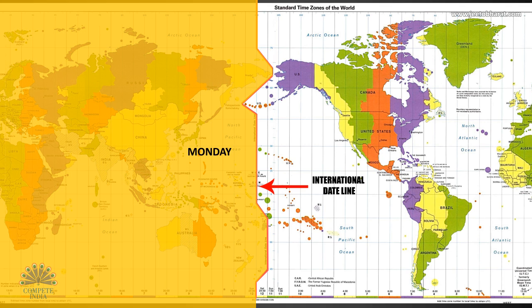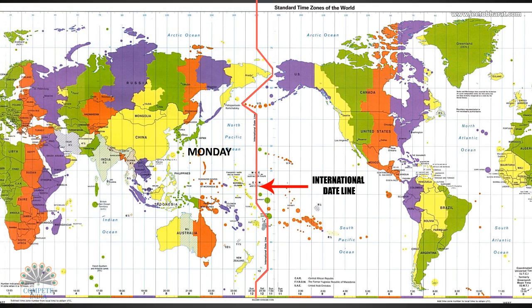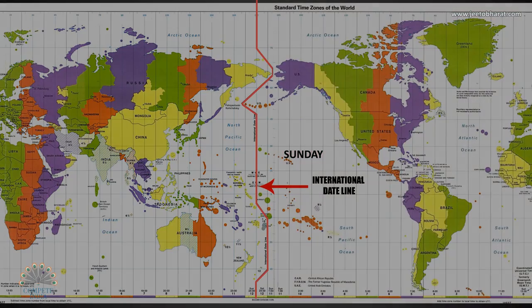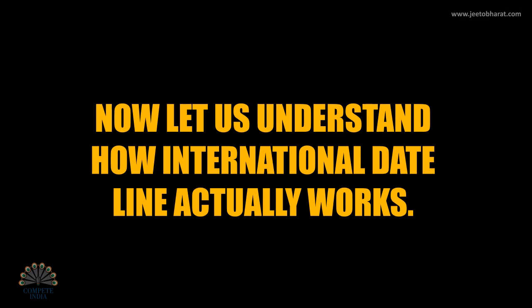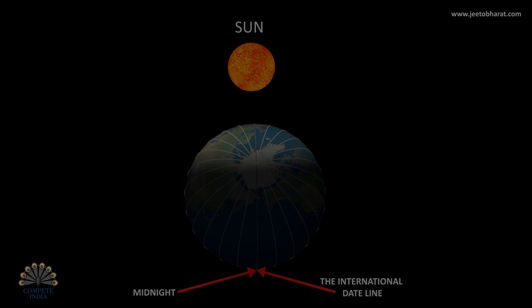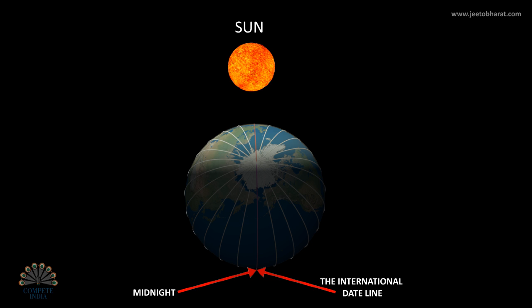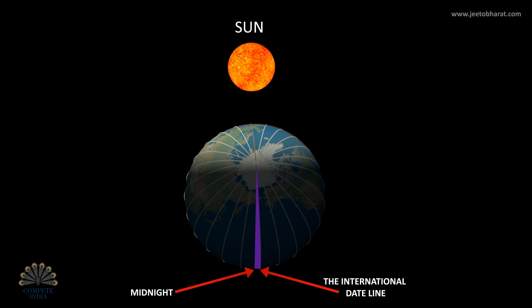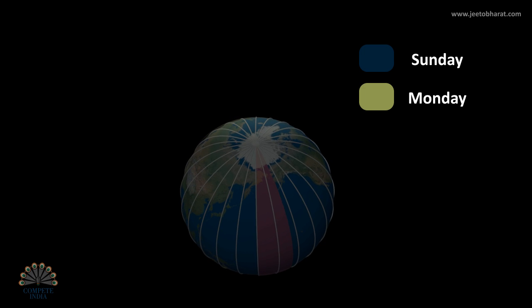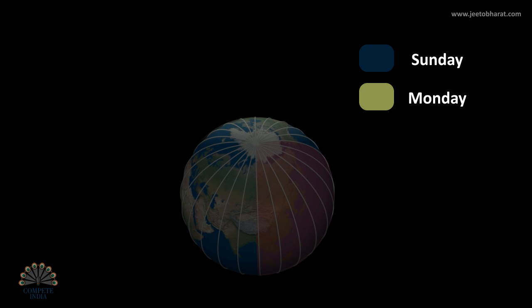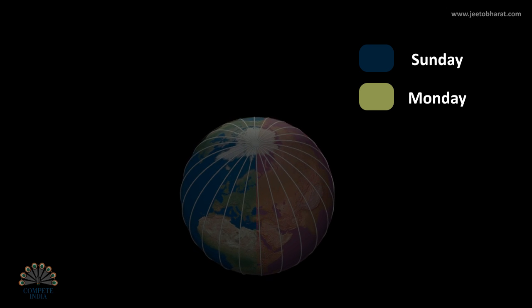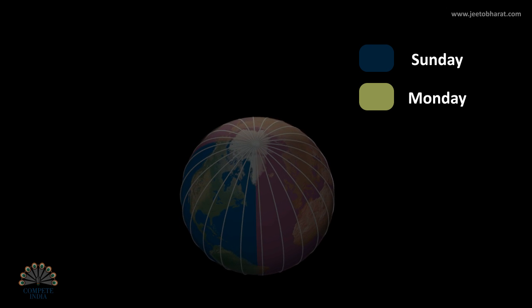Immediately to the left of the International Date Line, the date is always one day ahead of the place immediately to its right. When it is midnight at the International Date Line, the entire world is on the same day. But after a few minutes, a tiny slice of the Earth immediately to the left of the International Date Line is on a new day. So there are actually two date lines — one at the International Date Line and the other wherever it is midnight. If we assume the new day on the tiny slice is Monday, as each hour passes, Monday gets larger and Sunday gets smaller. This is how the days start and end at various places on the Earth.